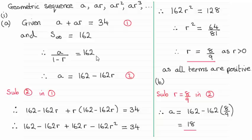So it's just a question of working out the simultaneous equations. I've continued with this equation and made a the subject by multiplying both sides by 1 minus r. So that gives me this line here.